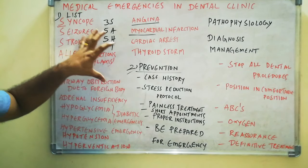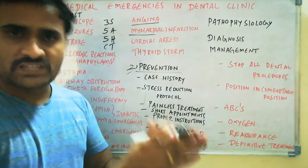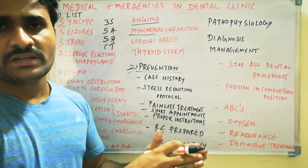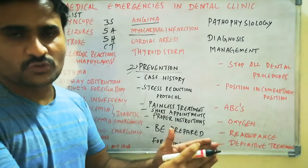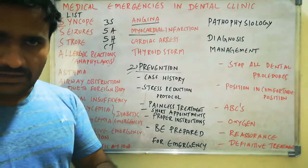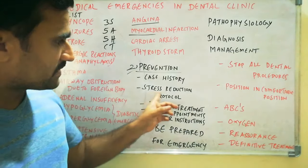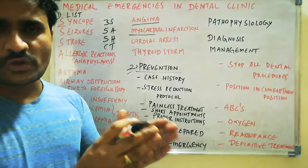Prevention is common to any medical emergency. First, you have to take a good case history — that means checking if the patient is suffering from any systemic diseases and whether that condition is under control. After that, follow the stress reduction protocol; if necessary, advise diazepam or alprazolam 0.5 mg before the procedure to ensure a good sleep.